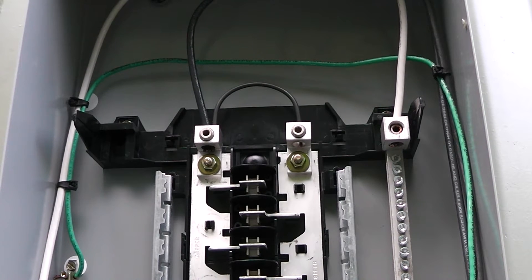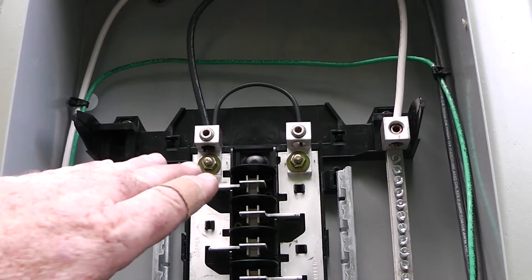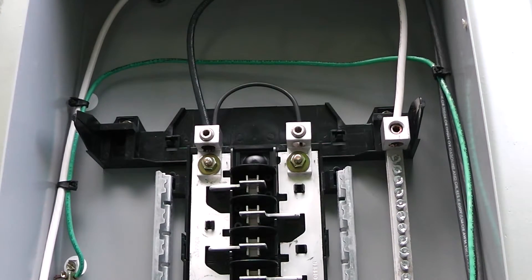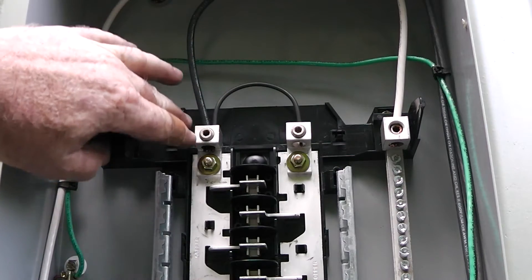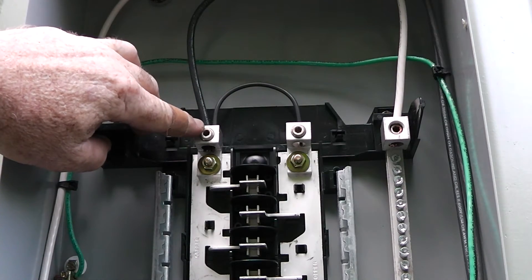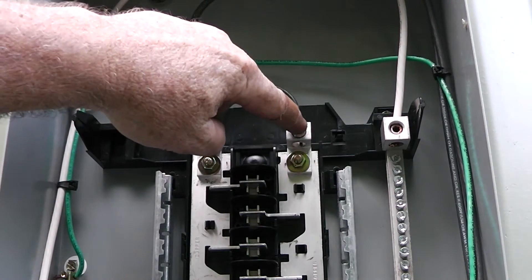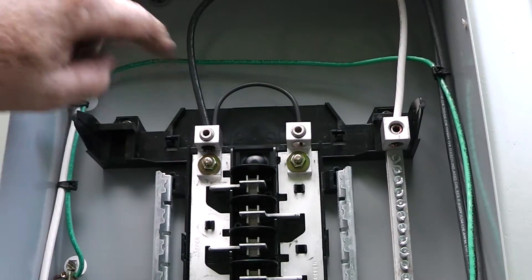Okay, I know I finished up with the video, but someone asked me a question a while back if it was legal to do this in a sub-panel. So they have one hot wire feeding, this is 120 volts, they have it jumpered over like this and then they have their neutral over here and they just want a 120 volt panel.